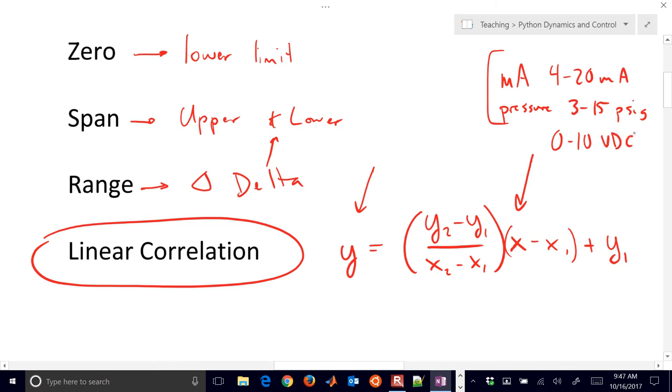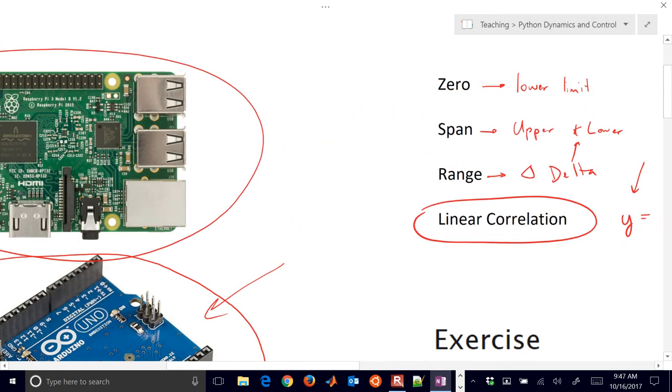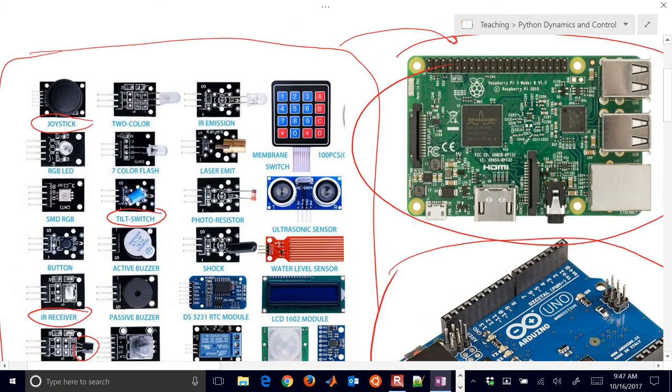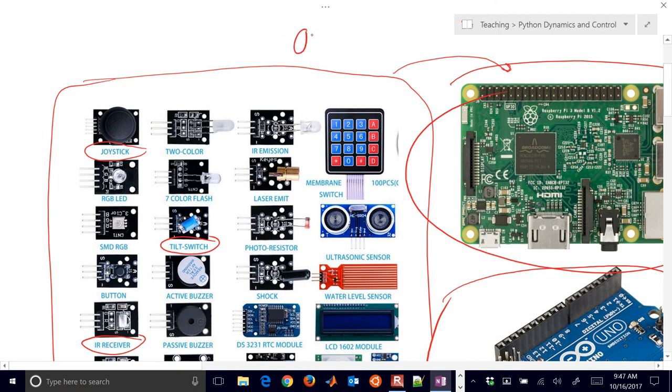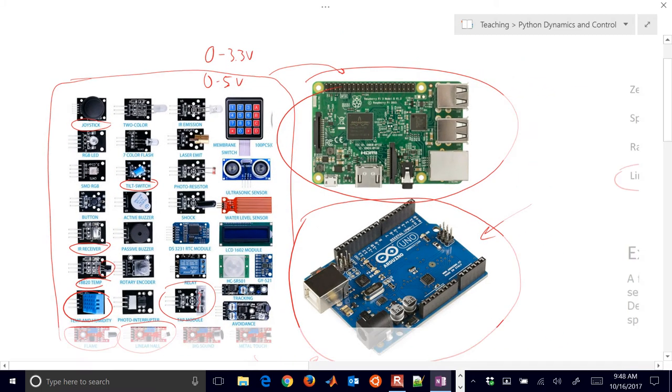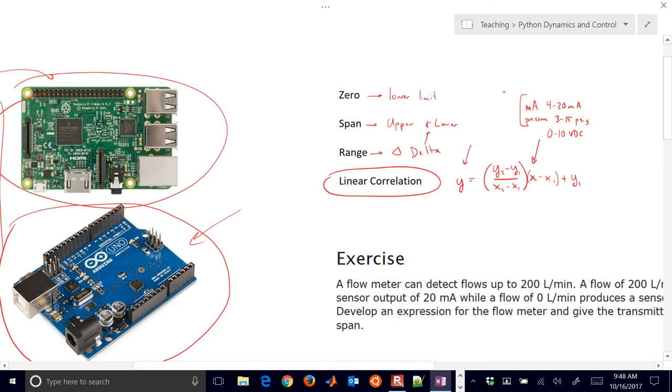There's others that are common. A lot of these sensors that are for the Arduino or Raspberry Pi. These are going to be 0 to 3.3 volts or 0 to 5 volts. So that's for like Internet of Things type applications. These small cheap sensors. For industrial systems, it's a lot of times this 4 to 20 milliamps or 3 to 15 psig. There's a couple other ranges out there as well.